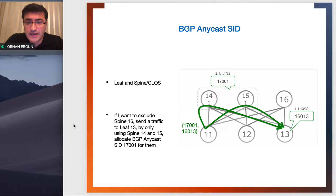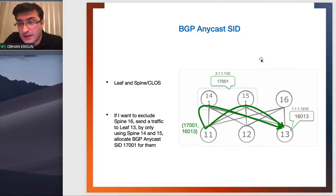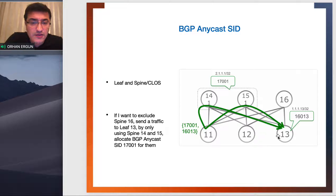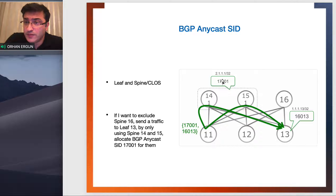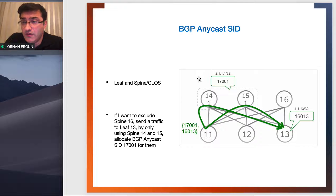Starting with the anycast SID — especially when we use BGP in large-scale data centers, in a Clos-based topology with leaf and spine, for example in this picture we have three leaves and three spines. For some traffic, we want to utilize two spines — let's say spine 14 and spine 15 — and from both of them we assign the same SID value, in this case 70001. Since in this network we don't have IGP, we just have BGP, the BGP neighborhood can be point-to-point.